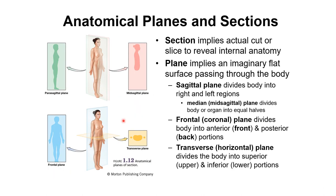Now we're going to go over anatomical planes and sections. A section implies an actual cut or slice to reveal internal anatomy. A plane implies an imaginary flat surface passing through the body.